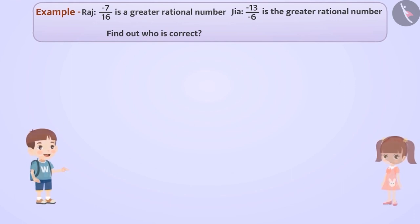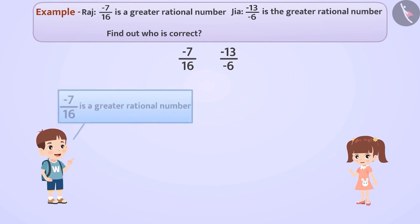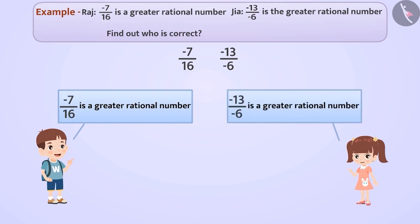Raj and Jiya were comparing minus 7 by 16 and minus 13 by minus 6. According to Raj, minus 7 by 16 is the greater rational number, but according to Jiya, minus 13 by minus 6 is the greater one. Find out who is correct between Raj and Jiya.